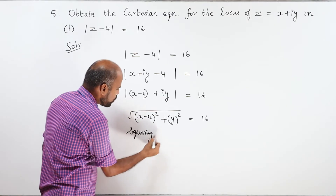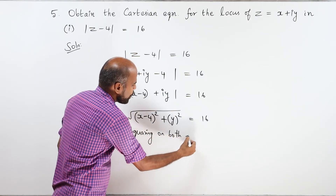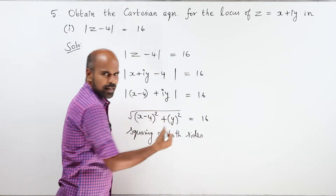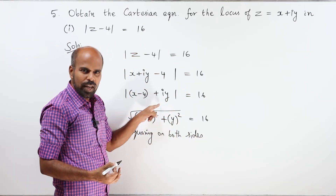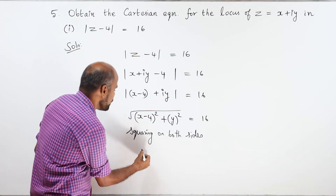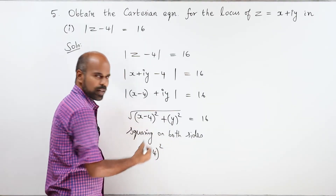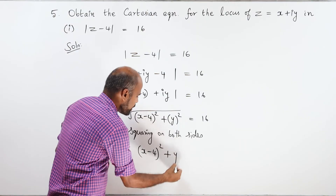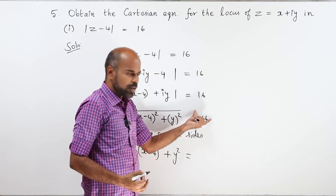Squaring on both sides — the square and square root will cancel. We get: x minus 4, whole square, plus y square equal to the right-hand side squared.